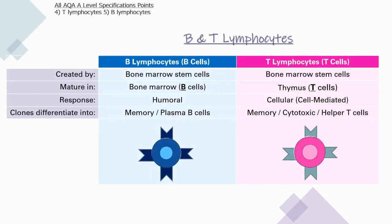B and T lymphocytes are both created by bone marrow stem cells. The key difference is that B lymphocytes mature in the bone marrow (hence 'B cells') whereas T lymphocytes mature in the thymus (hence 'T cells'). B lymphocytes are involved in the humoral response; T lymphocytes are involved in the cellular or cell-mediated response. B cell clones differentiate into memory and plasma B cells, while T lymphocytes differentiate into memory, cytotoxic, and helper T cells.